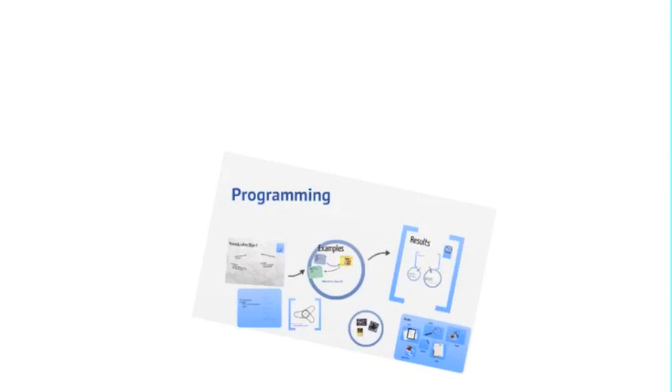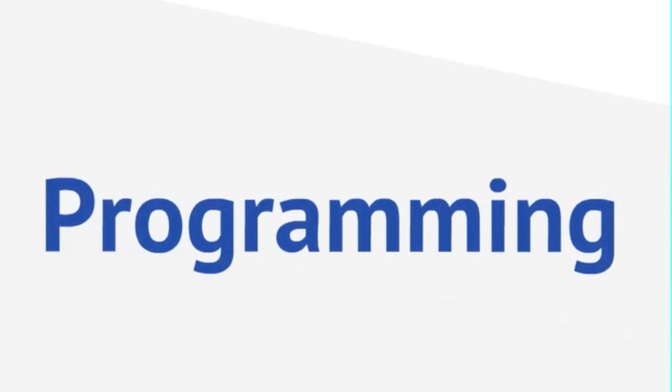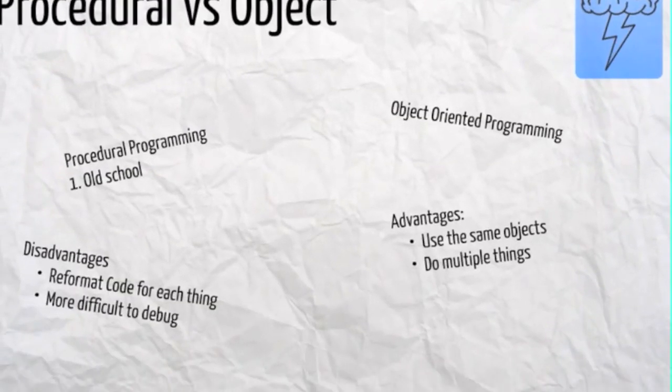I'm going to use the example of a pizza restaurant, and that's what we're going to talk about. So what we're doing is talking about procedural versus objective programming.